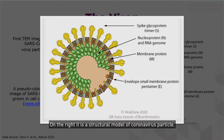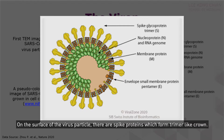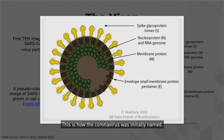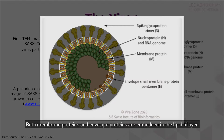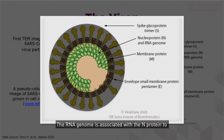On the right is a structural model of the coronavirus particle. Coronaviruses in general are enveloped, round, but pleomorphic. The particles are about 100 to 120 nanometers in diameter. On the surface of the virus particle there are spike proteins, which form trimer-like crowns — this is how the coronavirus was initially named. The S protein is very important because it binds to the cell surface receptor and mediates virus entry into the cells. It is also the most important virus antigen as the target for antibodies. Both membrane proteins and envelope E proteins are embedded in the lipid bilayer; they are important for viral assembly and integrity. The RNA genome is associated with N protein to form the nucleocapsid in the interior of the virus particle.